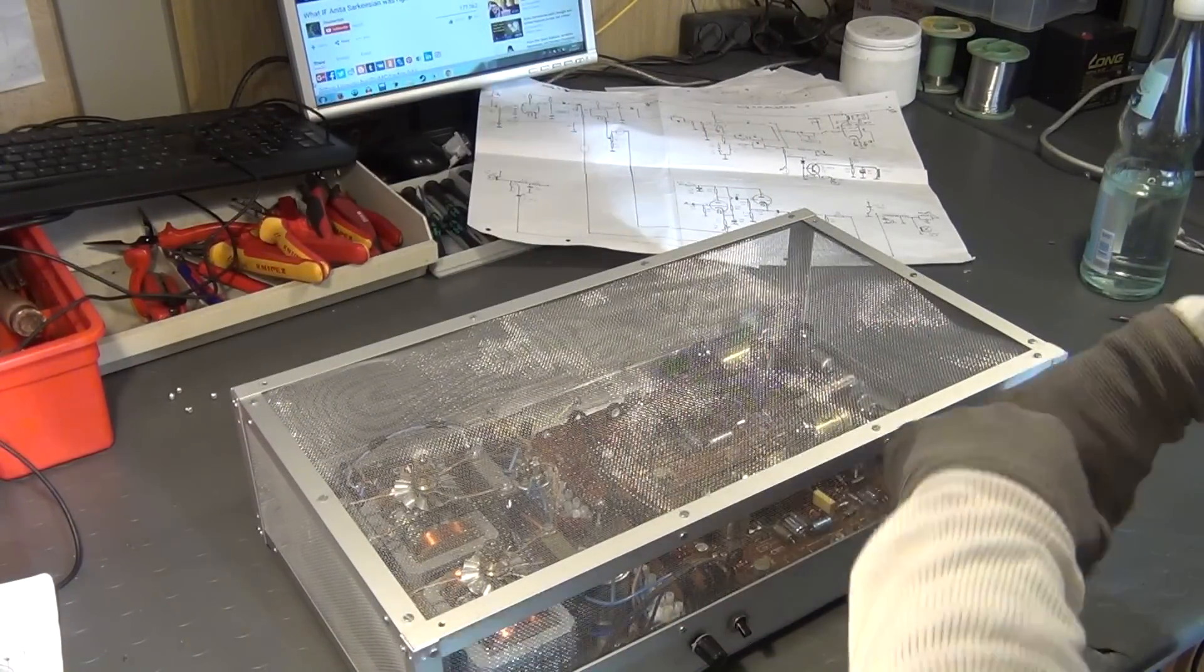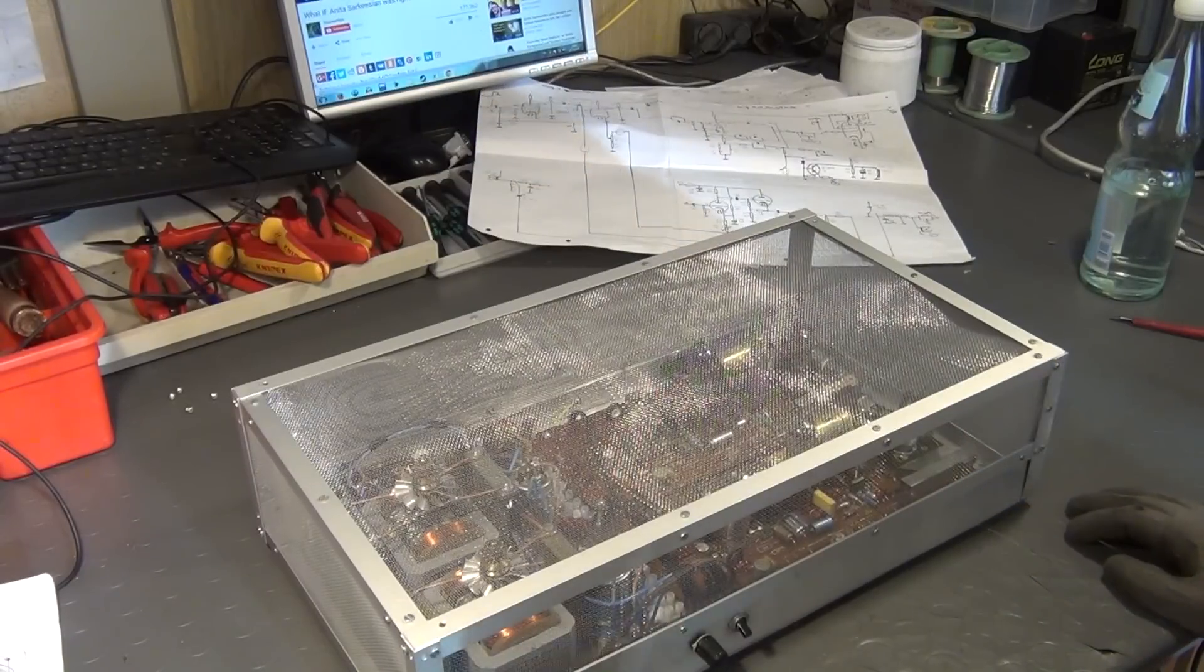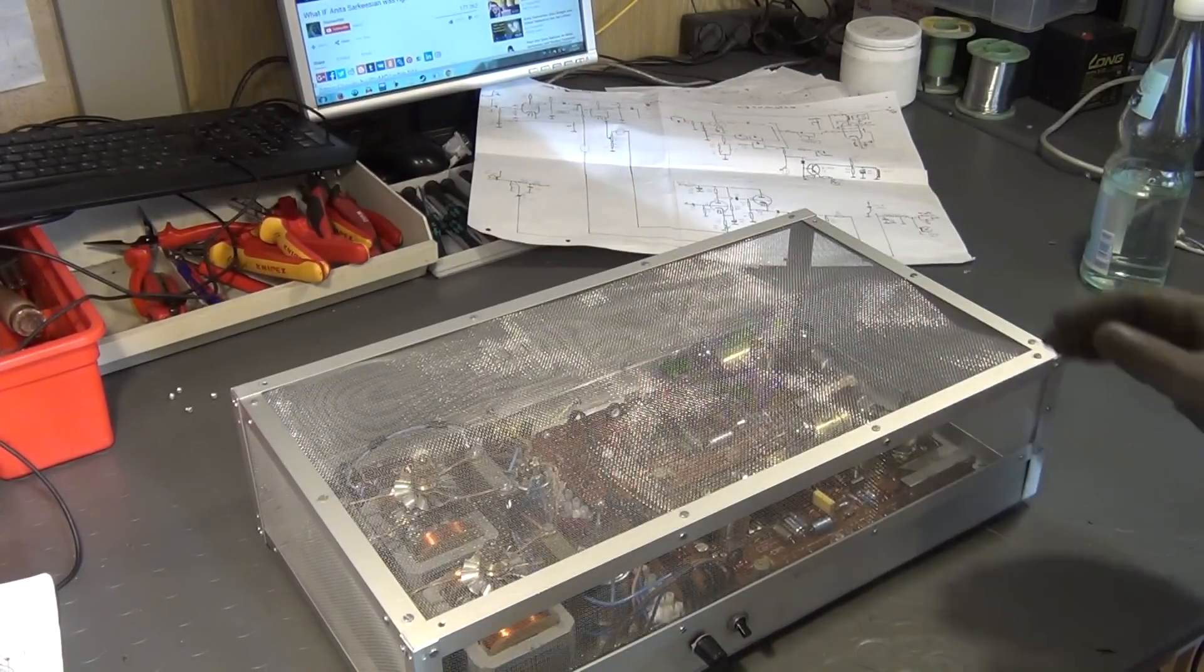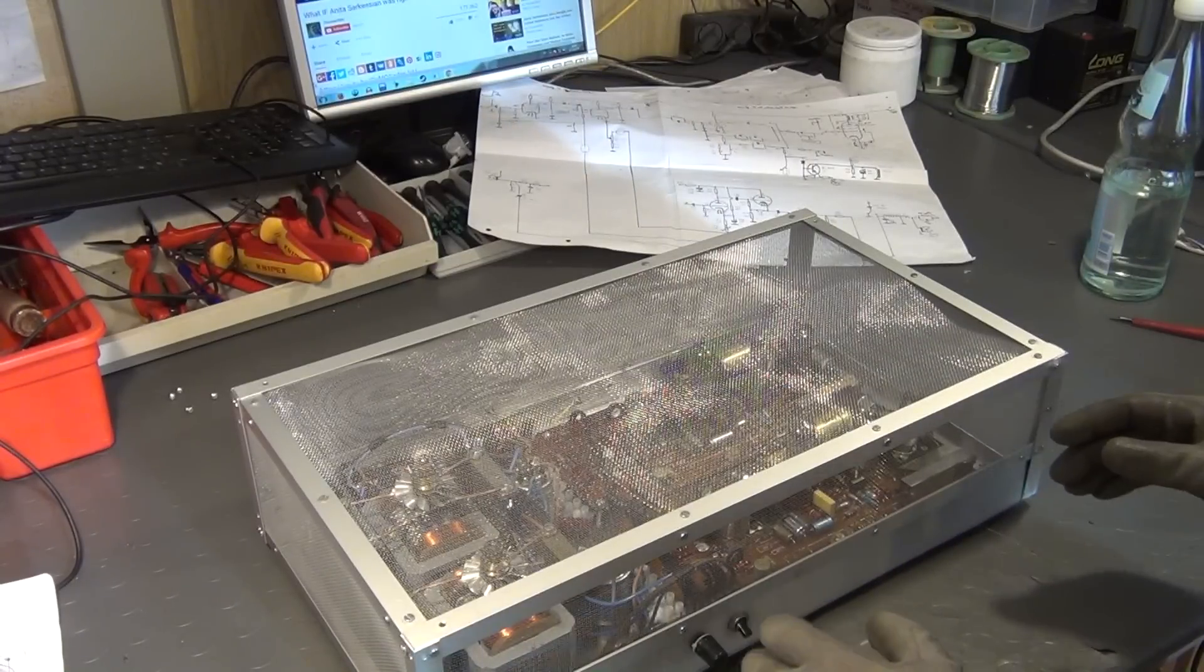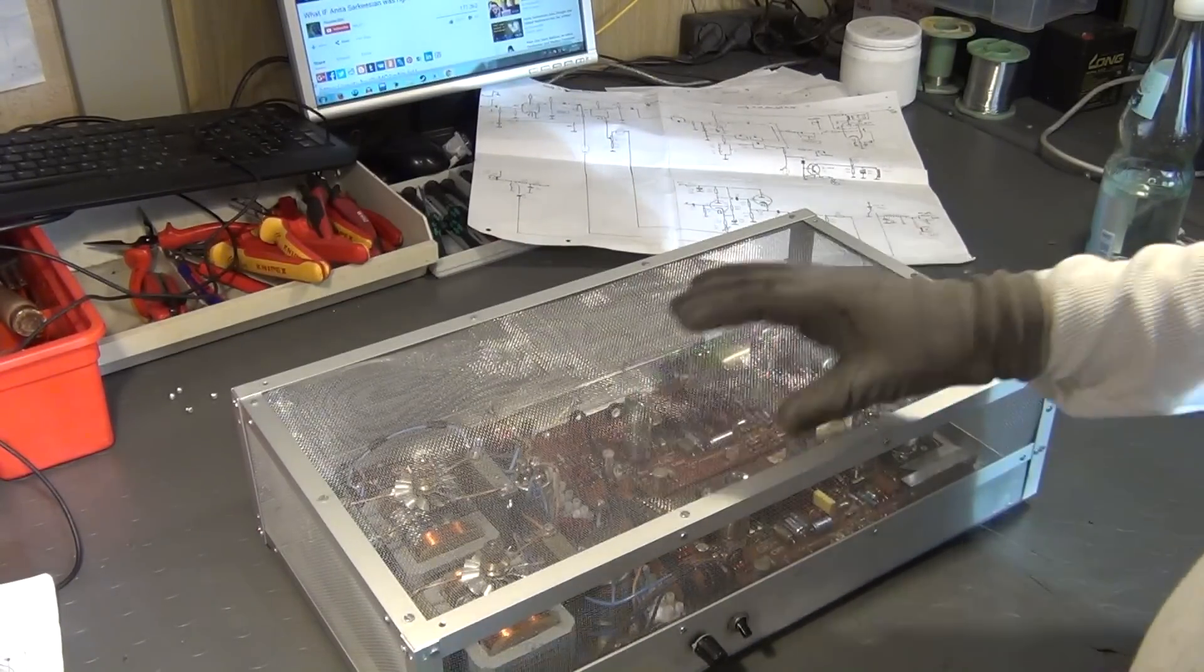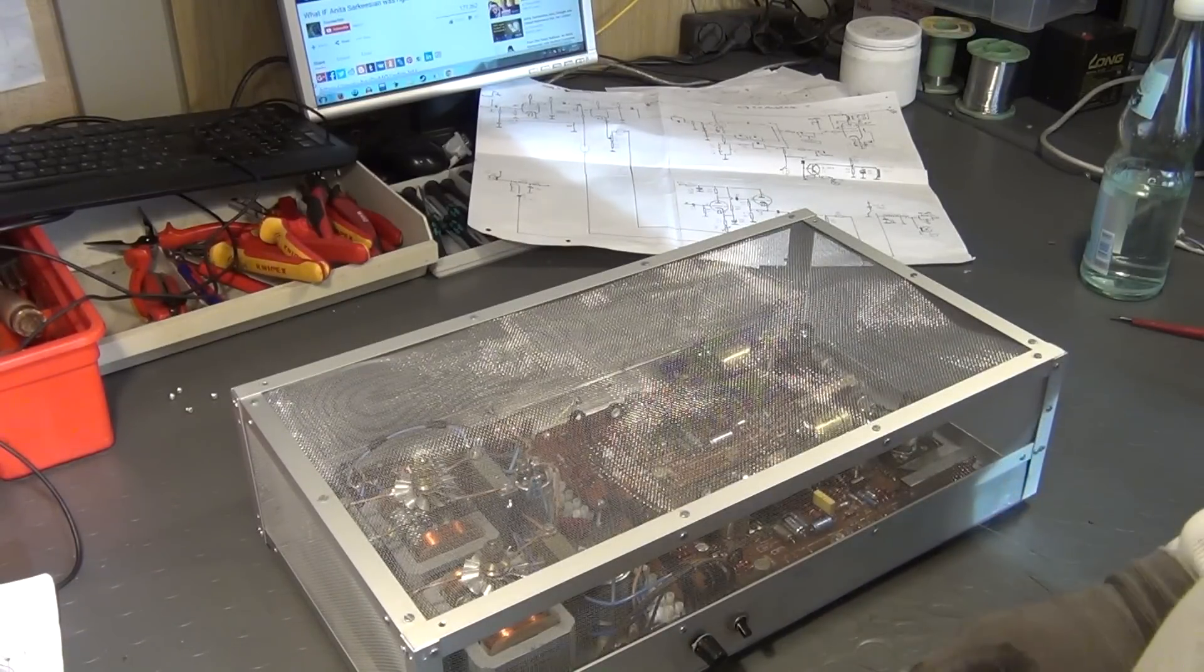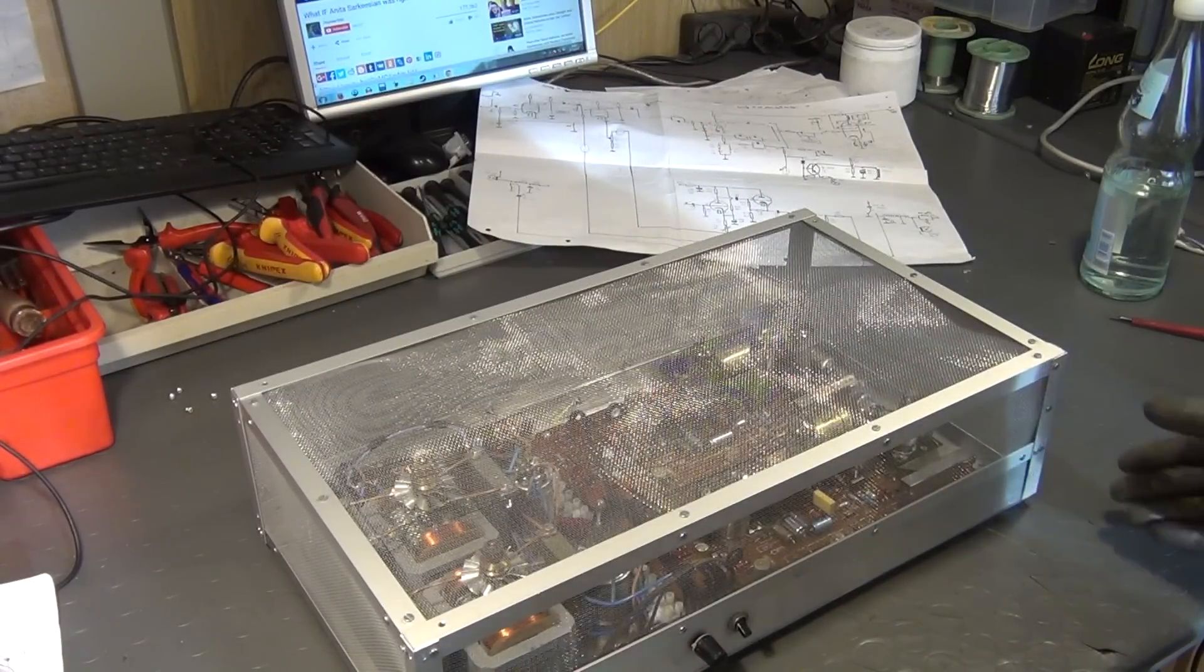And the entire enclosure was made by stock parts. Just aluminum angle plates and this aluminum mesh right here, which I am using to protect the device but at the same time make it possible to take a look inside and see the vacuum tubes and so on. Because the looks is basically what this project is about.